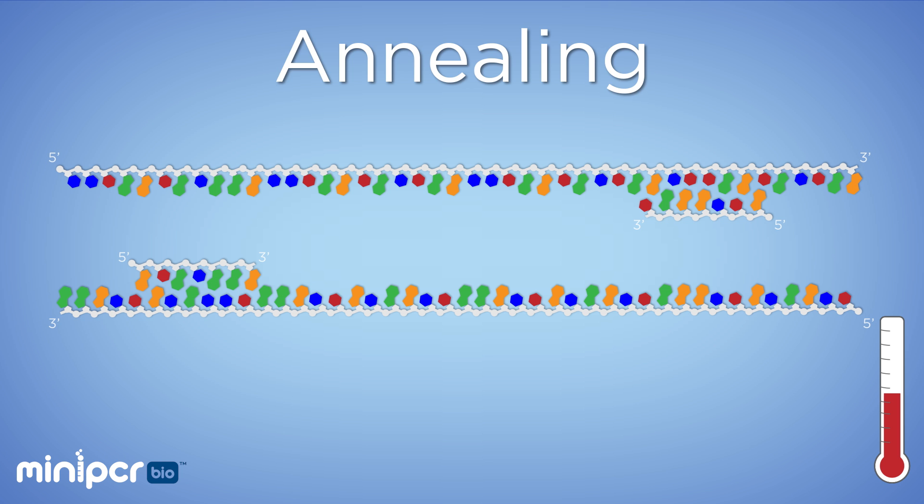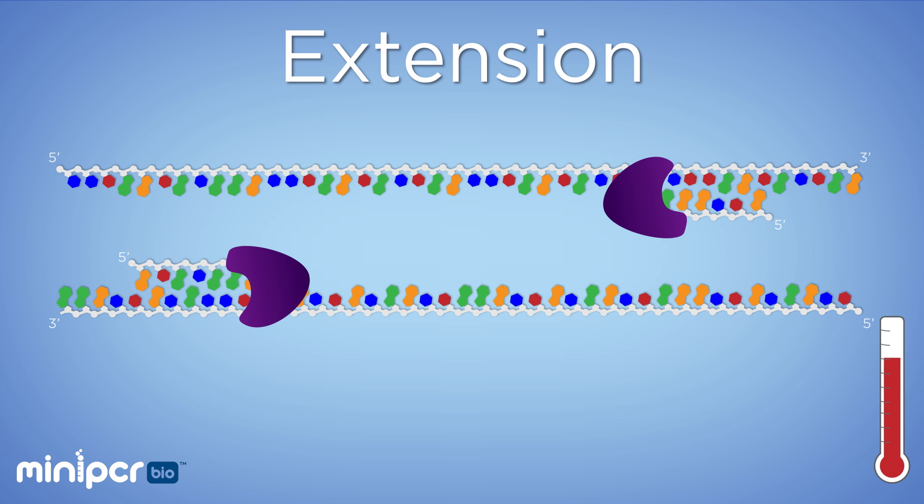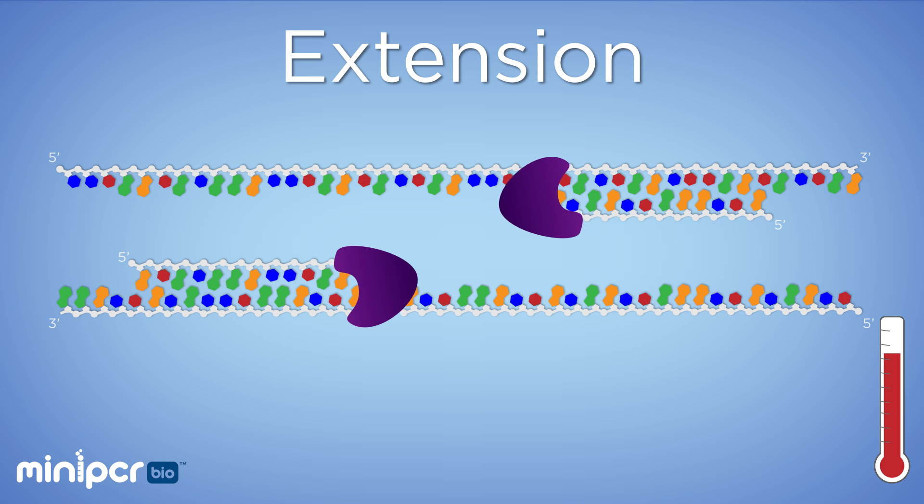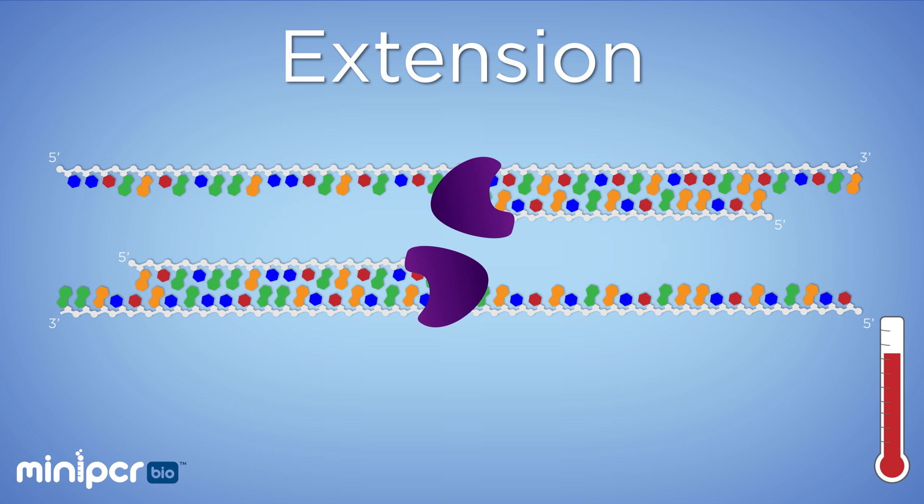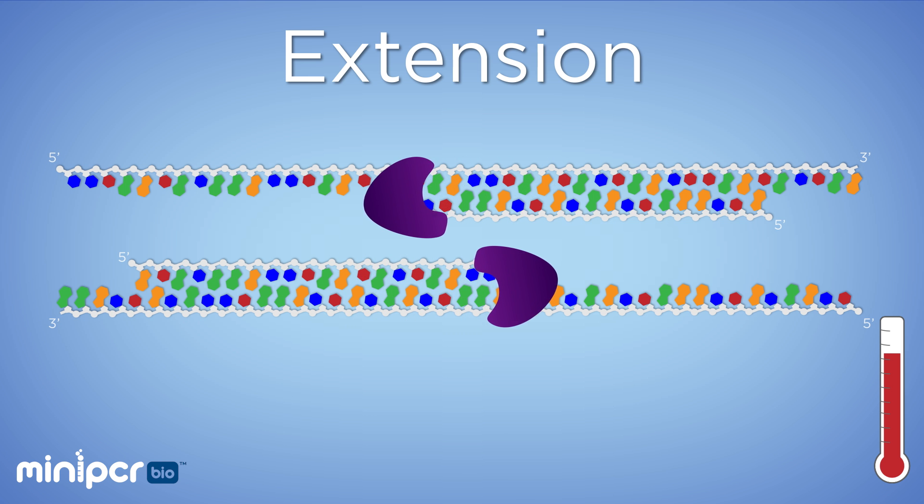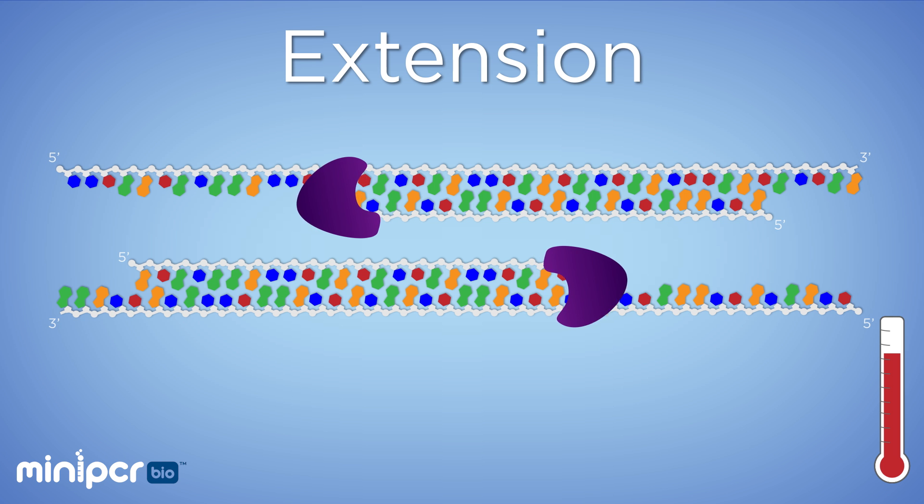Next, we heat the reaction back up again to extend or copy these new double-stranded areas where primer and template DNA have annealed. For this, we use an enzyme called a DNA polymerase, the P of PCR. The polymerase will find the ends of the short, double-stranded regions of DNA where the primers have bound. It then moves along the DNA, base by base in the 5' to 3' direction, and adds the correct complementary DNA nucleotides as it goes. If it finds a C on the template strand, it adds a G.